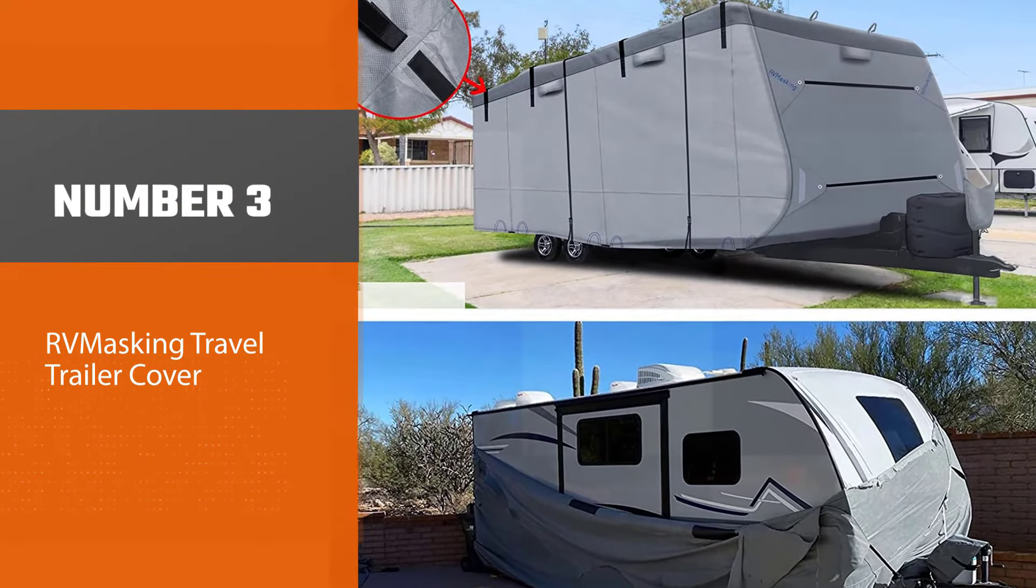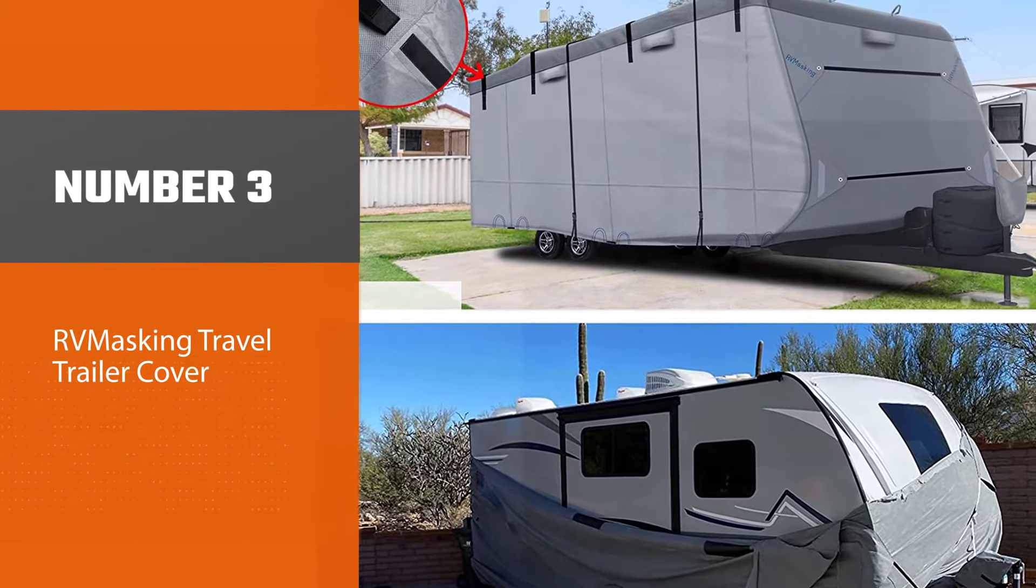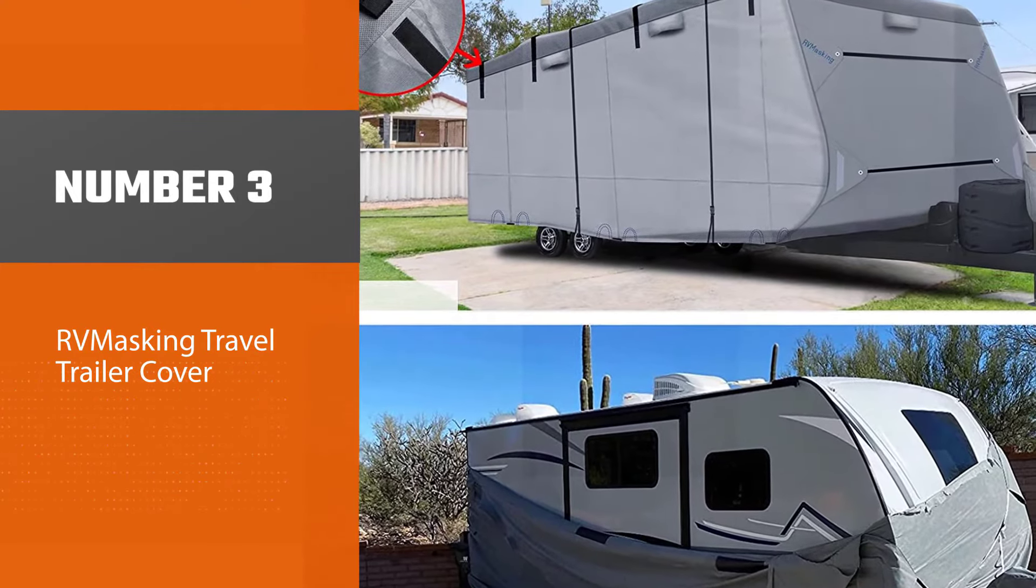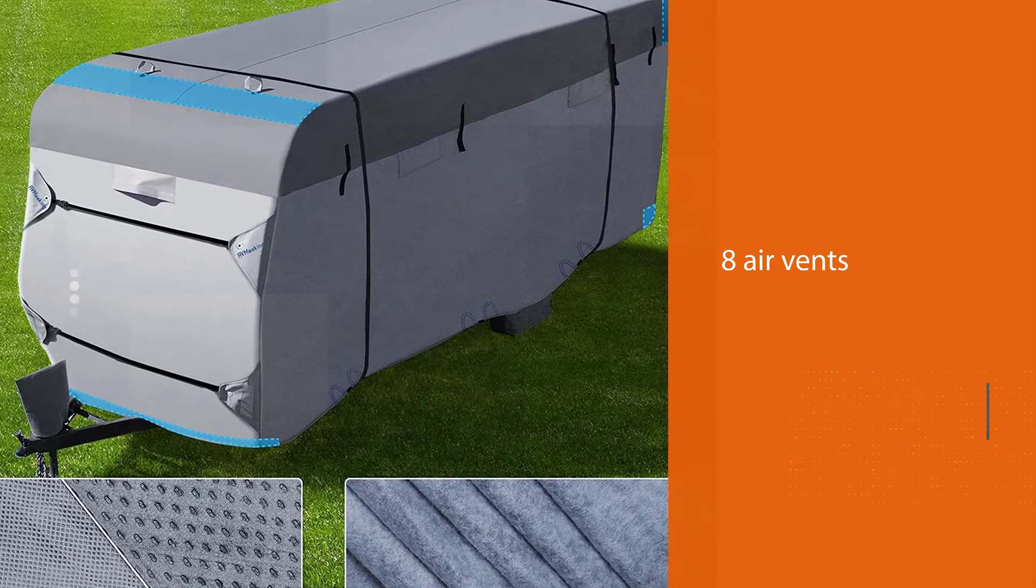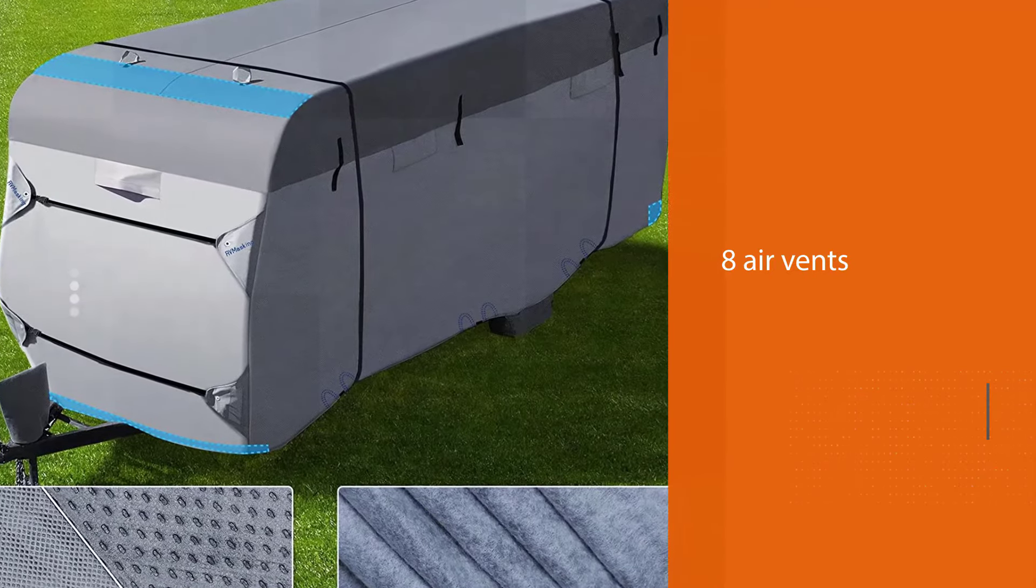Number three: RV Masking Travel Trailer Cover. The RV Masking cover has a lot of the features you'd expect to find on a mid to high-end RV cover: eight air vents, zippered side panels, and multiple tie-down straps.